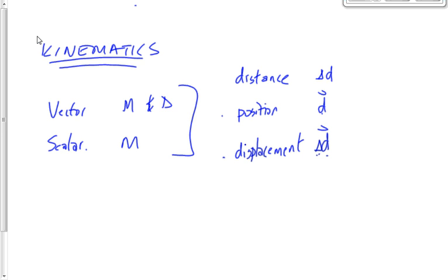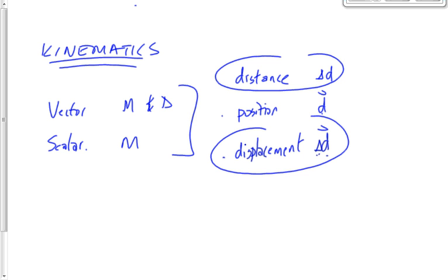One more example: I go seven meters to the north, then turn around and go three meters back. My distance traveled is ten meters. My displacement is four meters to the north — I started at zero and ended at four meters north. As soon as you change direction, displacement and distance become different numbers.